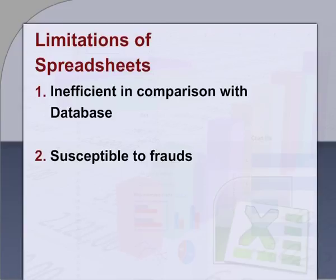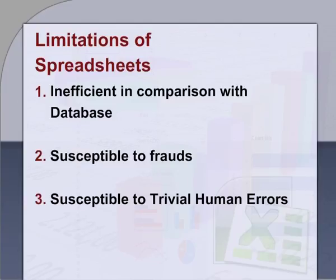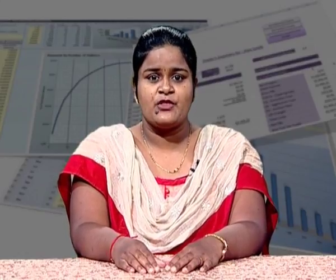Second, susceptible to fraud: the main underlying reason behind spreadsheet susceptibility is an inherent lack of control, which makes it easy to alter formulas, values, or dependencies without being detected. Third, susceptible to trivial human errors: it has extreme susceptibility to even trivial human errors, and one cannot efficiently identify the errors easily.